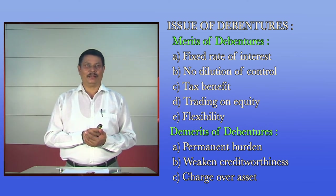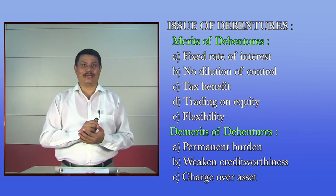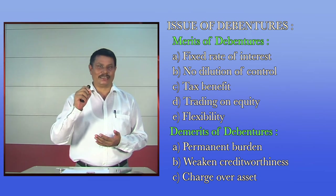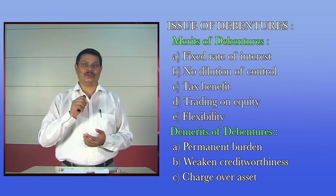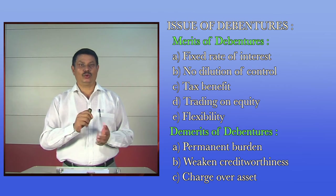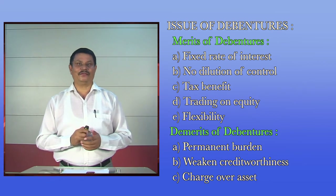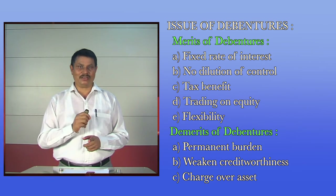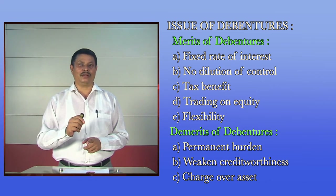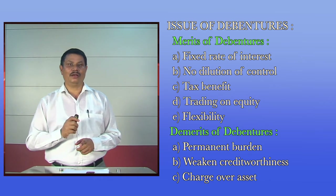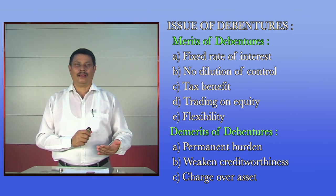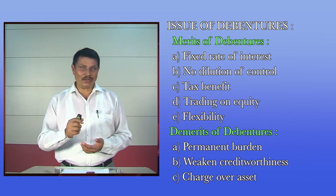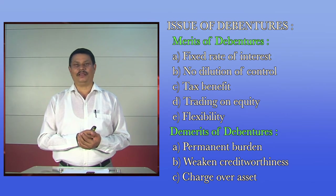Merits of debentures: number one is fixed rate of interest — debentures always carry a fixed rate of interest, which is good for both the company and the debenture holders. Debenture holders are assured of a fixed income, and the amount of interest to be paid remains fixed for the company. Next is no dilution of control — unlike equity shares, issue of debentures never dilutes the controlling power of equity shareholders because debenture holders do not have voting rights. Next is tax benefit — interest paid on debentures is tax deductible, making it one of the cheapest sources of long-term capital.